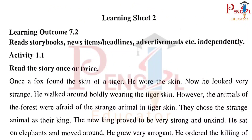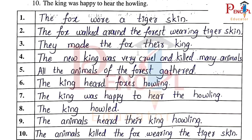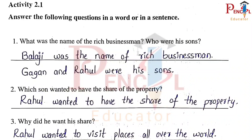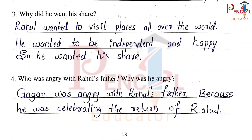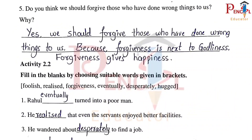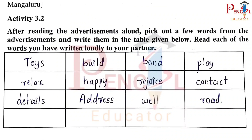Learning Sheet 2, Activity 1.2 — Strange Wearing Skin Animal: Tiger. Activity 1.3, Activity 2.1 — Gagan was angry with Rahul's father because he was celebrating the return of Rahul. Vocabulary: eventually, realized, desperately, hugged, foolish, forgiveness, unhappy, poor, gay friends.